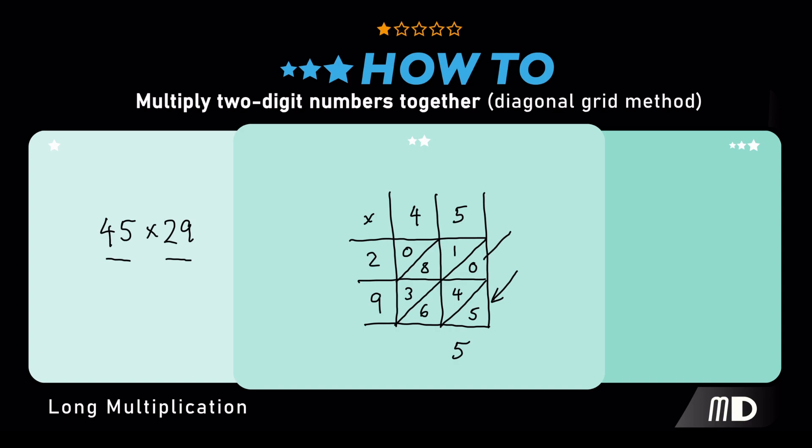The second diagonal is 0, plus 4, plus 5, and that gives us 10. So, the 0 goes down, and we carry the 1, and we carry that to the next diagonal.